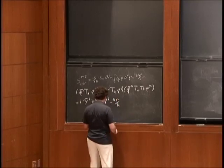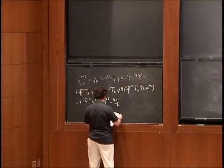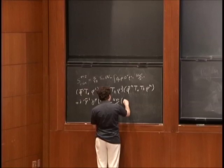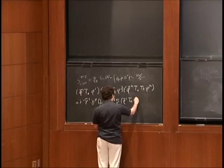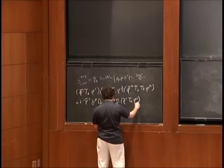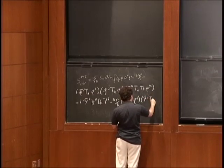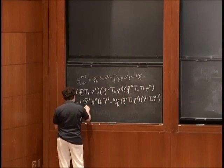In the N=2 Yang-Mills theory coupled to matter in three dimensions, there is a real scalar in the vector multiplet, which you can think of as coming from the dimensional reduction of the third component of the gauge field in a four-dimensional theory. When we added the Chern-Simons term, that scalar became massive, and when we integrated it out, it resulted in some of these couplings that appear here.